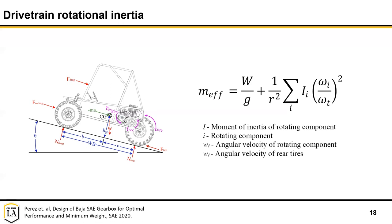An important nuance with CVT systems: the rotational inertia addition to effective mass only applies when that component is rotationally accelerating together with the vehicle. If the primary sheave is sitting at a constant 3,200 RPM slipping on the belt, or the engine is slipping on the clutch at a fixed RPM, it's not accelerating with the tires and doesn't add rotational inertia. But for all components fixed to the tires that must accelerate with them, this inertia is significant and is often overlooked when modeling vehicle acceleration or making drivetrain design decisions.